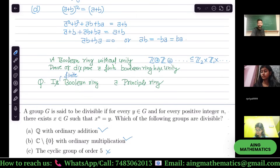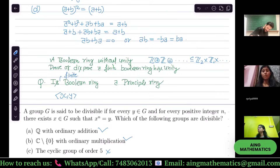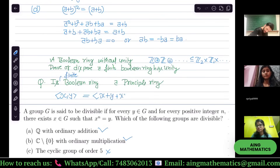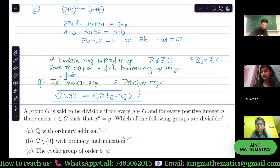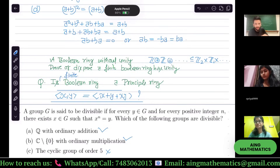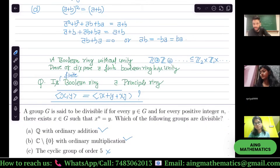Homework: Is every finite Boolean ring a principal ring? Hint: think about what a single generator can be. What element could generate the ring? Work this out as homework.